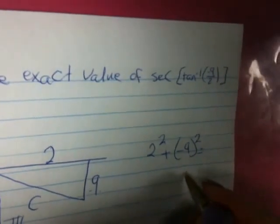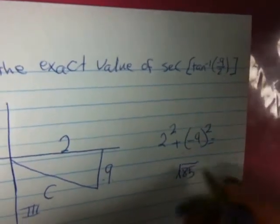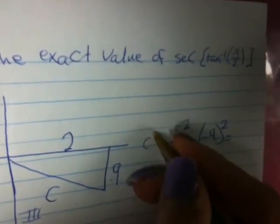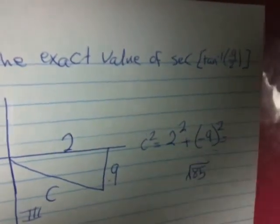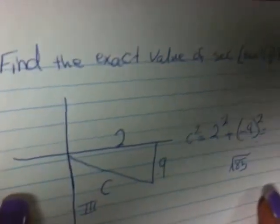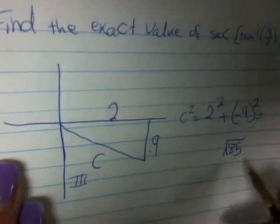This equals 85. We will take the square root of 85 because we have C squared equal to this number.